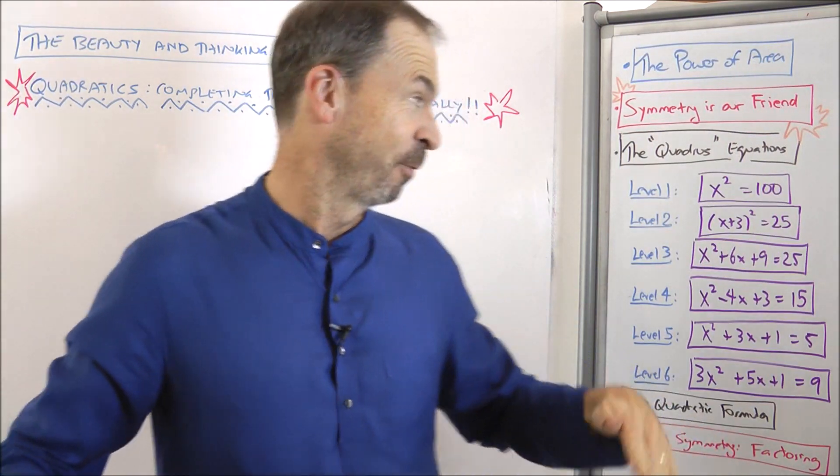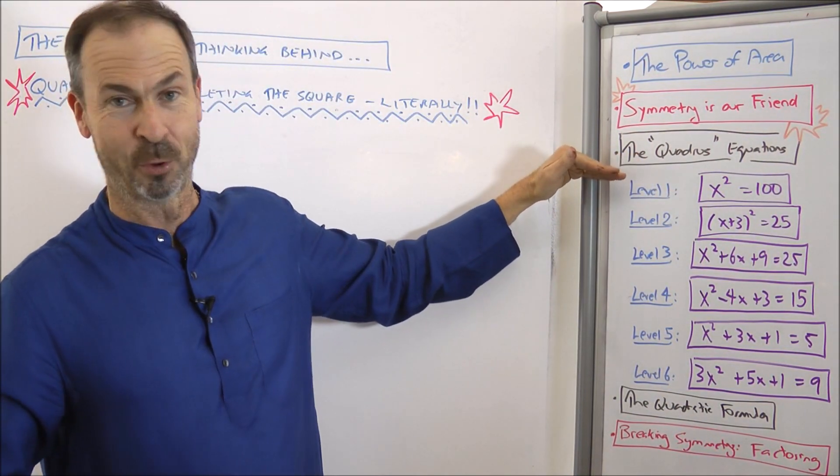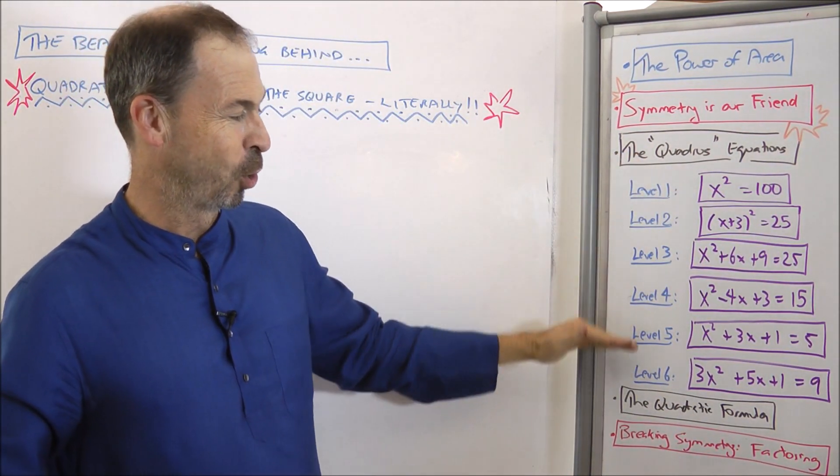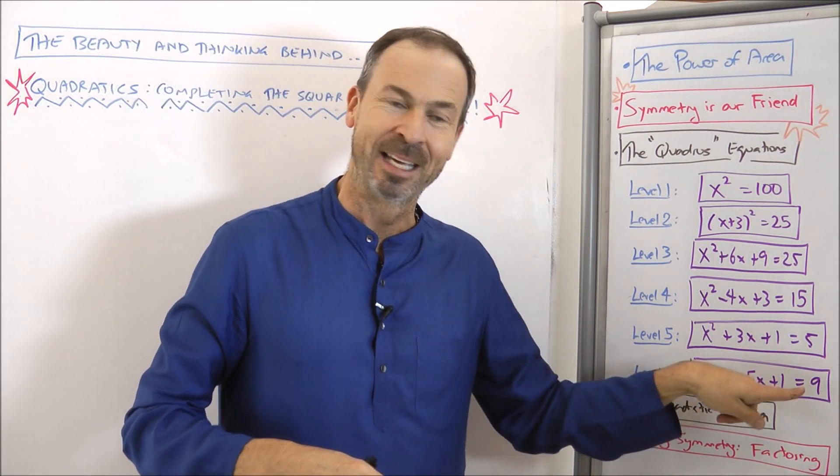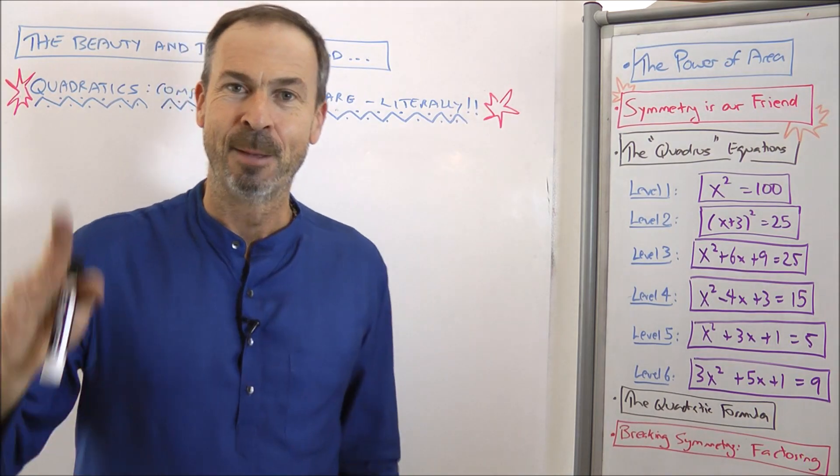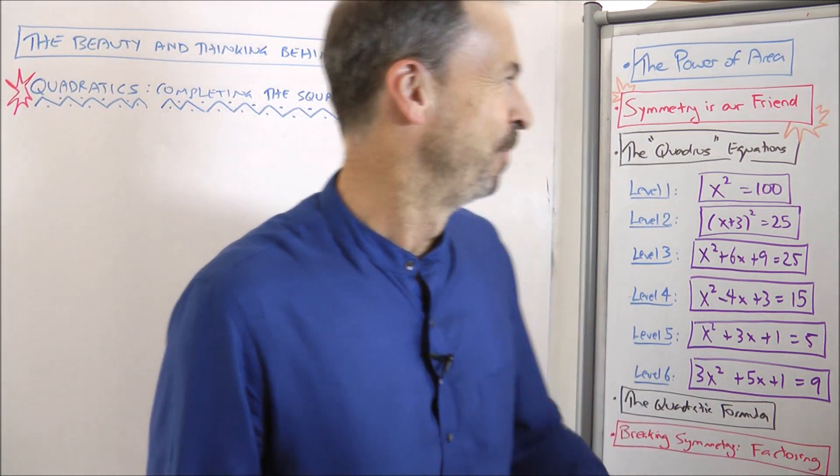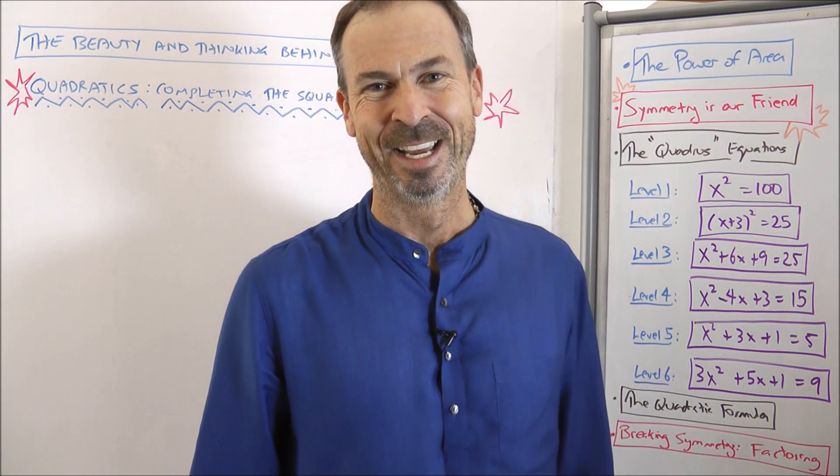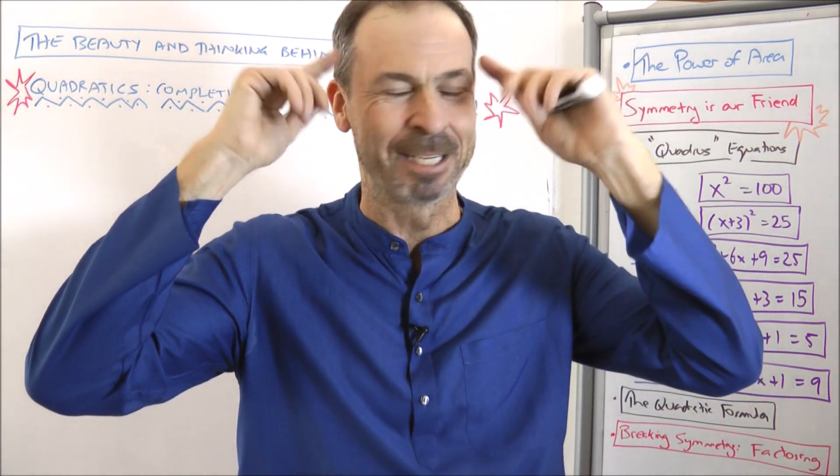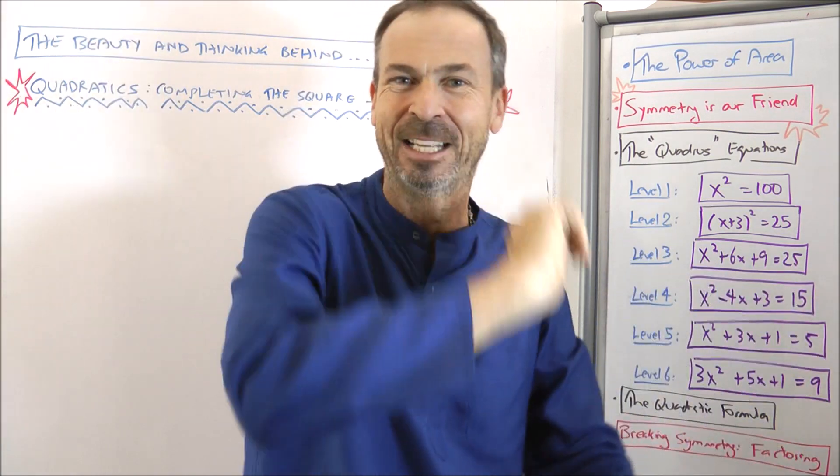Now I'm going to go through these equations. I'm going to start with various levels of equations. You can see on the board already, level one equations all the way up to level six. So here's what a general quadratic equation looks like. We're going to start and build our way up by using the power of area and the fact that symmetry is our friend. This is the true story of quadratic equations and it's great because once you've got the understanding, nothing to memorize.